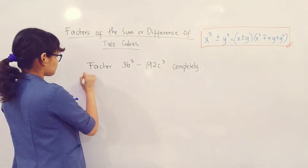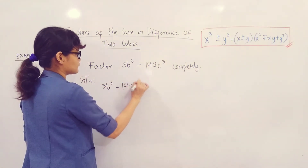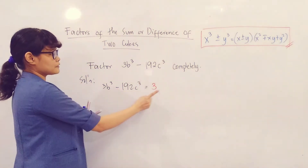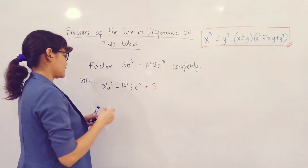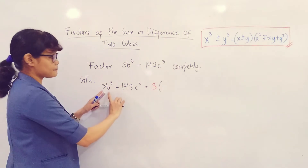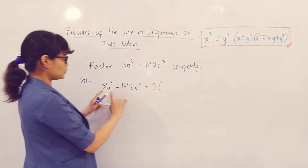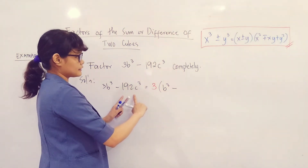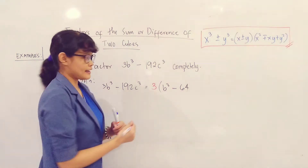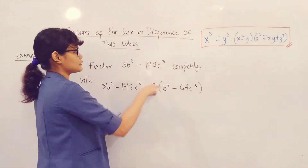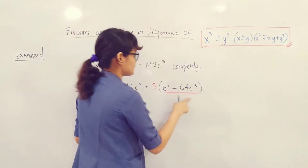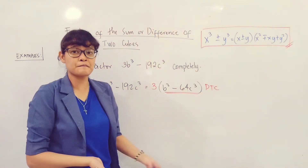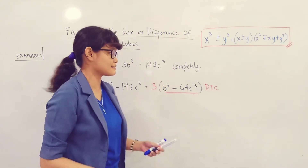In this case, there is a common monomial factor. We have 3 and 192, and their greatest common monomial factor is 3. So we rewrite: 3b cubed minus 192c cubed equals 3 times (b cubed minus 64c cubed), since 3b³ ÷ 3 = b³ and 192 ÷ 3 = 64. Now the binomial inside is a difference of two cubes, so we proceed with the first step.